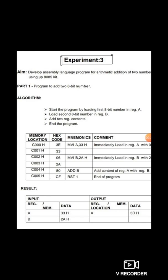For the addition of two 8-bit numbers, first of all write the program. A program is a set of instructions, and an instruction is a command given to the processor to perform a particular task. Here the task is to add two 8-bit numbers — for example, 33H and 2AH.